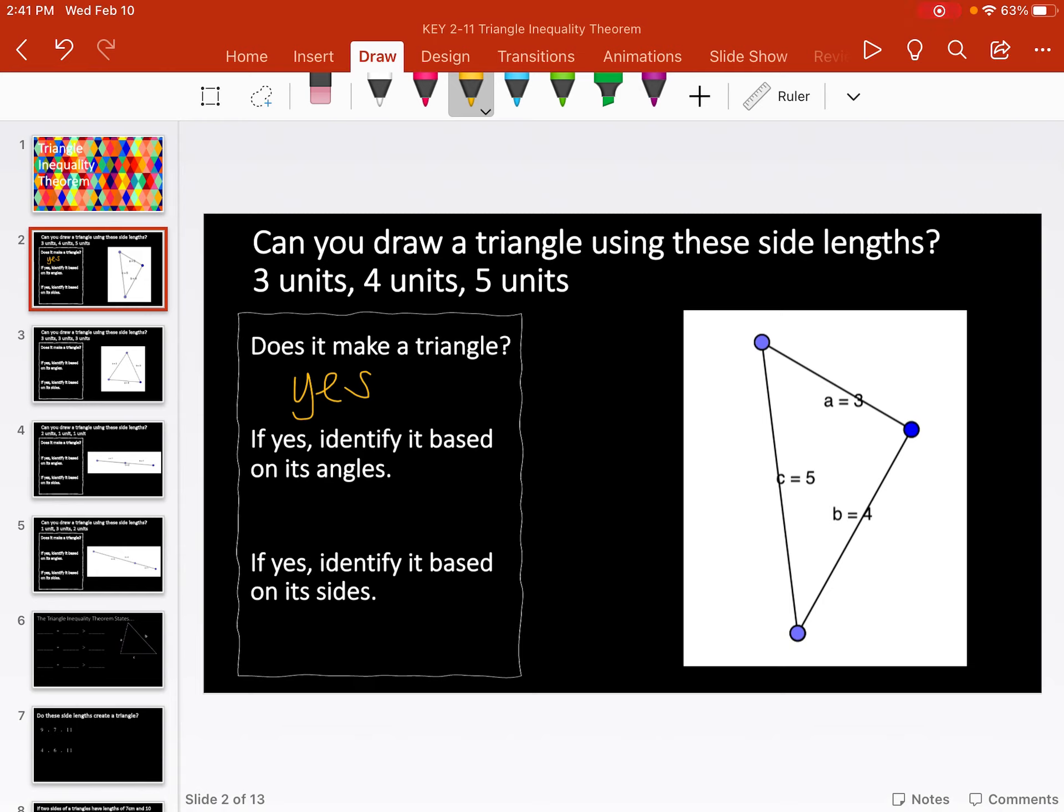Go ahead and see if you can decide what these would be identified as. By its angles, all three of these angles are acute angles. So we would call this an acute triangle.